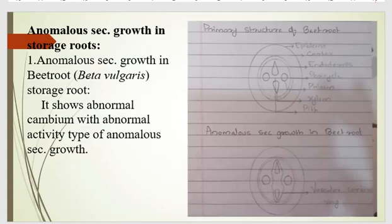Hello students, today we study the next topic in this unit: anomalous secondary growth in storage roots. In the previous video we talked about anomalous secondary growth in stems with different examples. Today we are talking about roots. Two different root examples are in your syllabus — first is Beta vulgaris, that is beetroot, and second is radish.